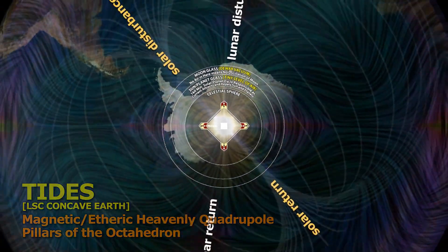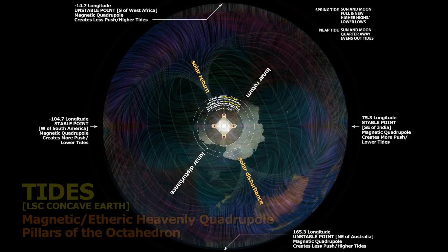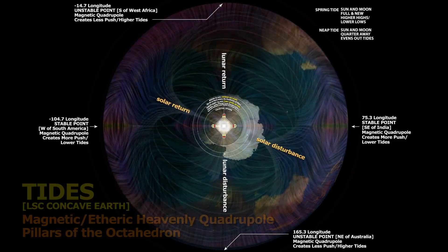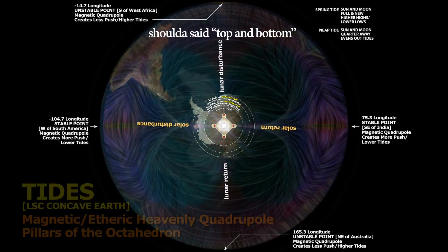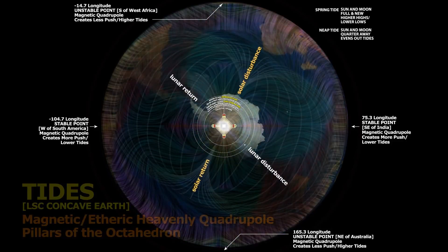The top and bottom we have the unstable equilibrium points. The stable ones are going to be one just west of South America and one just southeast of India, and as you can see there you see the push happening. Conversely we have the actual unstable points on the north and the south — one at negative 14.7 west of Africa and one at 165.3.